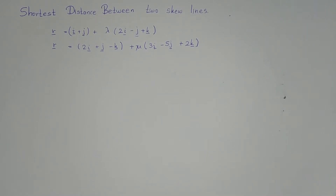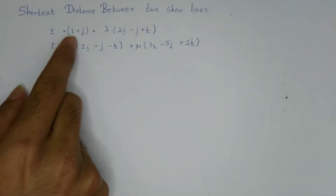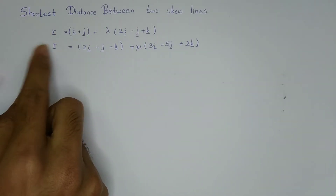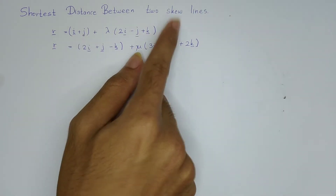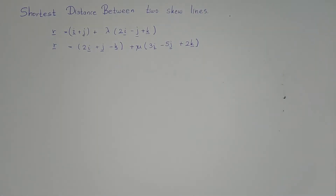In this video I'm going to show you how to find the shortest distance between two skew lines. They have mentioned two line equations — remember these are two skew lines. Skew lines are lines in a 3D plane but they won't intersect.